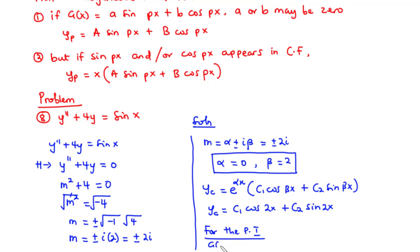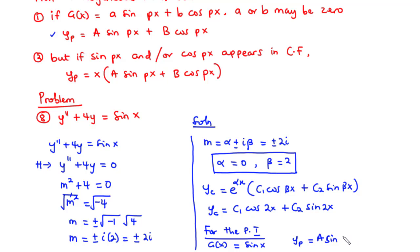Now let's find the particular integral. We have g(x) = sin(x). Comparing with the complementary function, we have sin(x) here and sin(2x) in yc. Since sin(x) ≠ sin(2x), sin(x) is not found in the complementary function. Therefore we use Case 1 and set yp = a·sin(px) + b·cos(px), where p = 1.